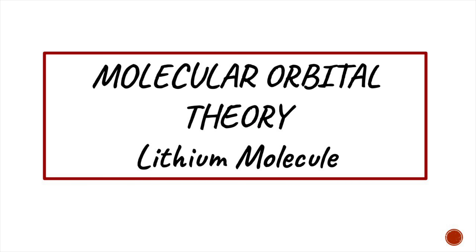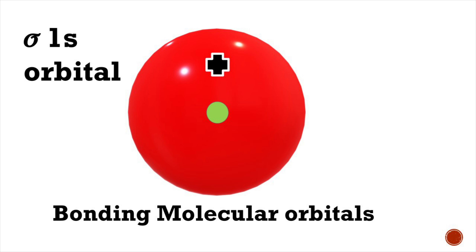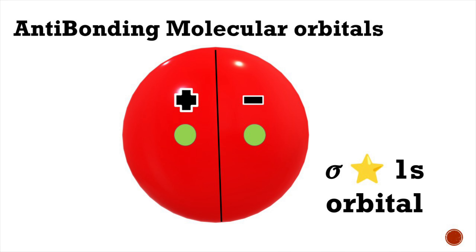Welcome to Aurora Chemistry for Everyone. Let us analyze how to draw the molecular orbital diagram of lithium molecule. According to molecular orbital theory, when atomic orbitals combine they form molecular orbitals. There are two possibilities: bonding molecular orbitals and antibonding molecular orbitals.